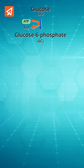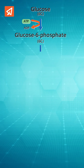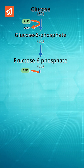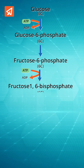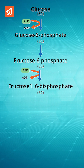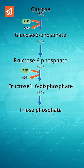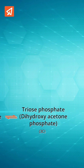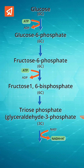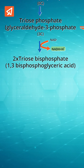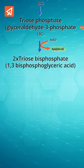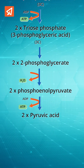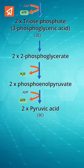Glucose 6-phosphate is isomerized to form fructose 6-phosphate, which then forms fructose 1,6-bisphosphate. This molecule breaks down into two 3-carbon molecules: glyceraldehyde 3-phosphate and dihydroxyacetone phosphate. G3P then forms 1,3-bisphosphoglyceric acid, 3-phosphoglyceric acid, 2-phosphoglyceric acid, phosphoenolpyruvate, and pyruvic acid.